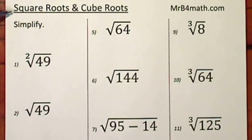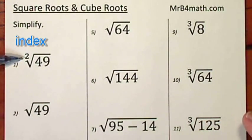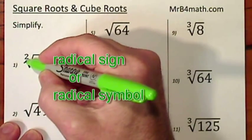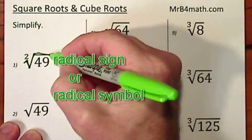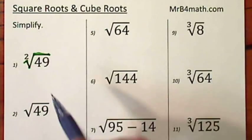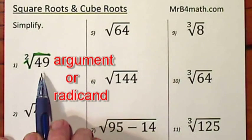When looking for a square root, usually the directions will say just simplify. This 2 is referred to as the index. This symbol is referred to as the radical sign. The number underneath the radical sign is called the argument or the radicand.